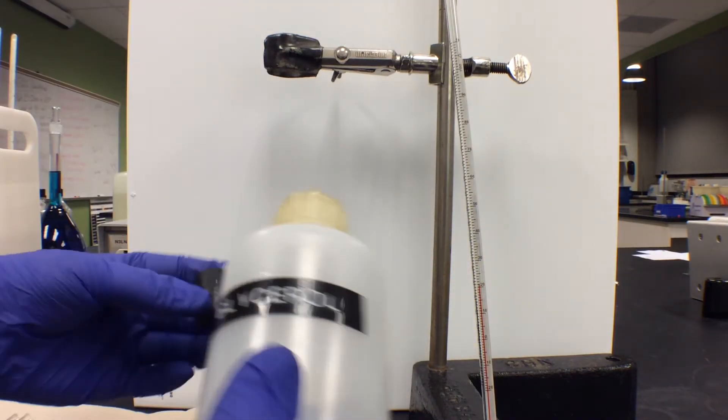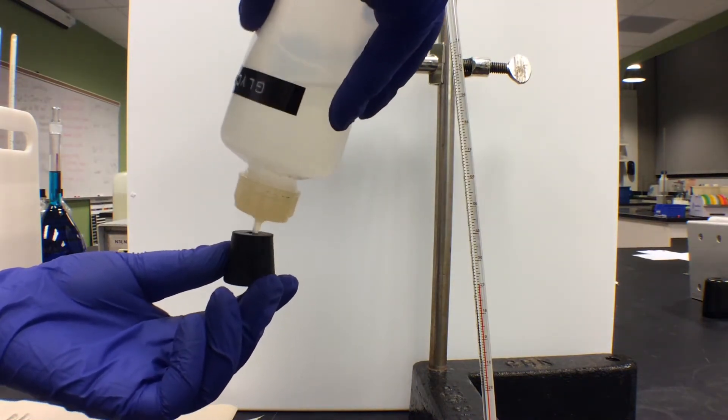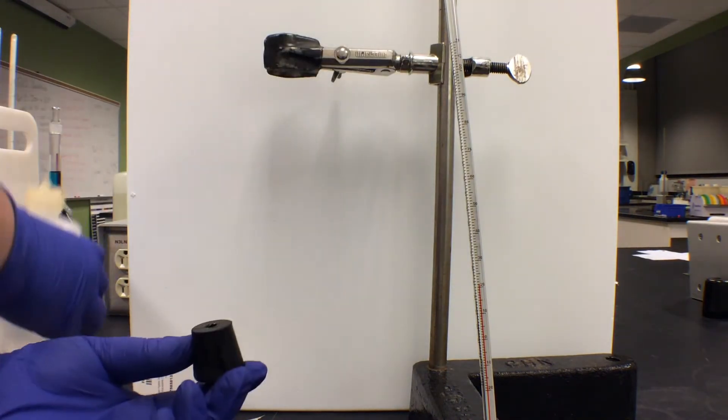To safely slide the thermometer through the stopper, use a little bit of glycerol. Glycerol is a little messy, so be careful.